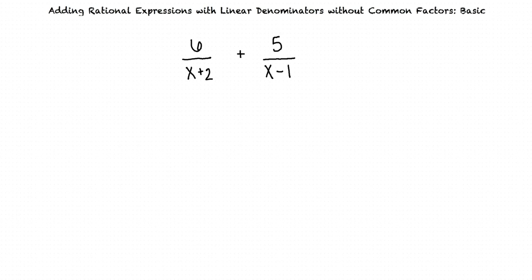To do this, we need to find the least common denominator of 6 over x plus 2 and 5 over x minus 1. Since x plus 2 and x minus 1 don't have any common factors, the least common denominator will be the product of the two original denominators.